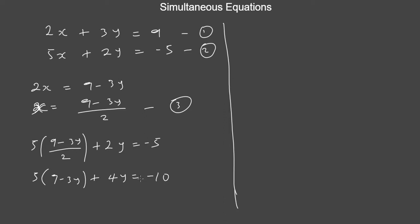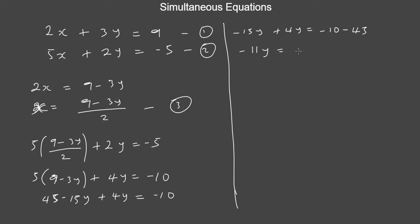Collecting like terms: minus 15y plus 4y equals minus 10 minus 45. That gives minus 11y equals minus 55. Dividing both sides by minus 11, y equals minus 55 divided by minus 11, which gives y equals 5.